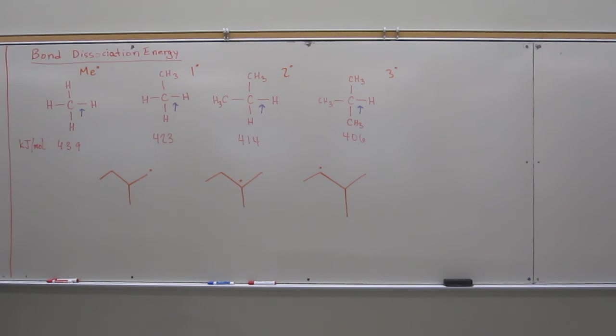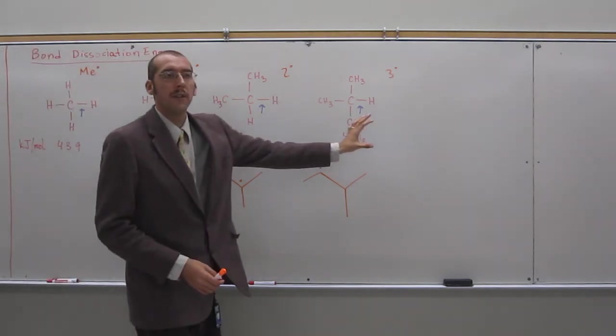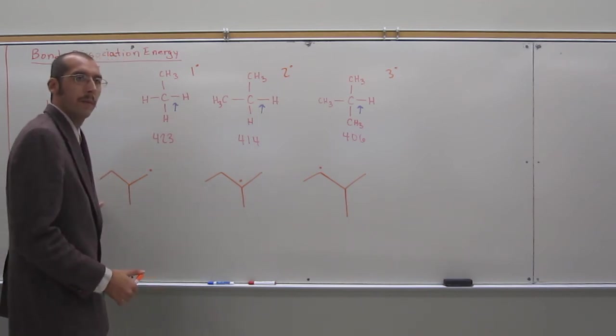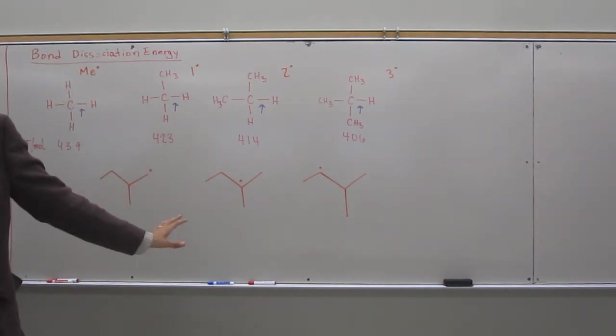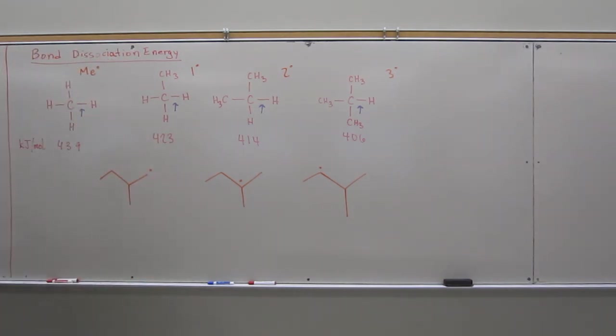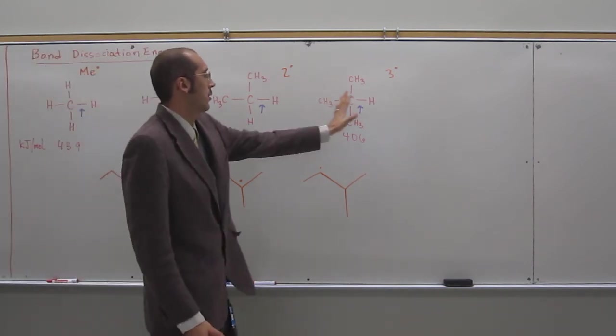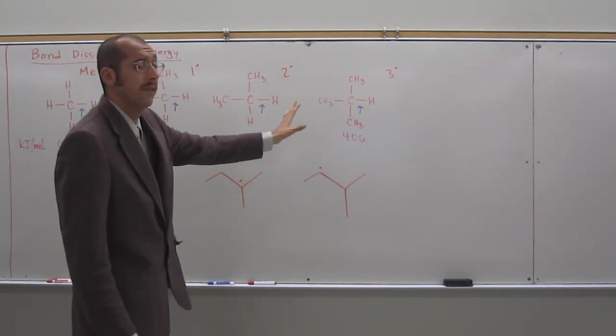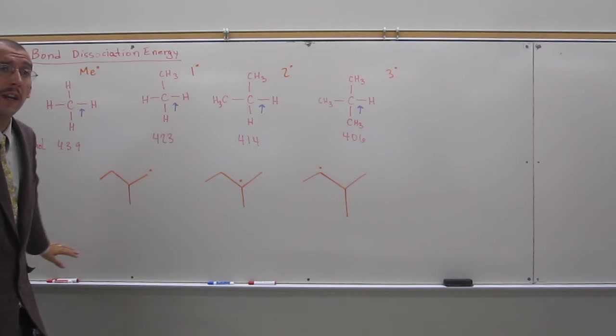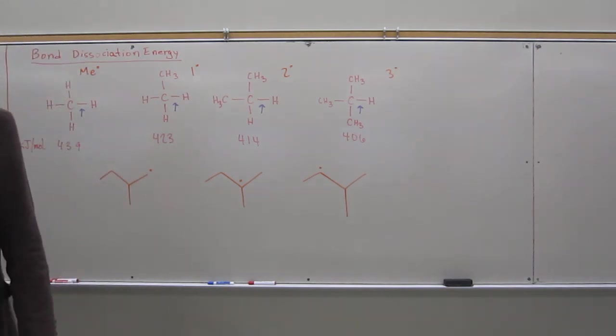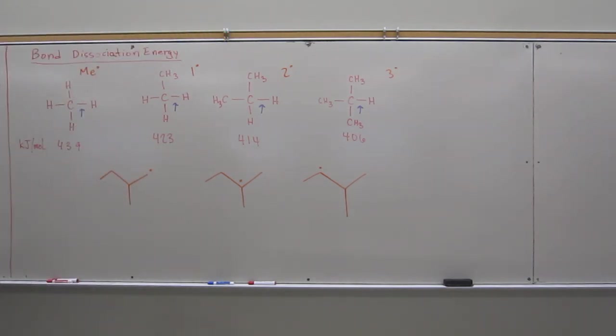So, that's going to kind of mirror or the opposite, really, of the bond dissociation energy. So, the stability, remember, stability and reactivity are opposites of each other. So, whichever one is the most reactive is going to be the most stable radical. Why? Because it's reacting to become more stable, essentially, the most stable thing that it can do.